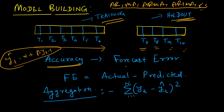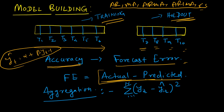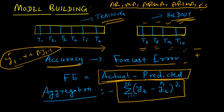To find the accuracy, you calculate the forecast error — the difference between actual and predicted. You cannot simply add them up because some errors are negative and some positive, and they might cancel. Instead, you square the errors so everything becomes positive, then add them up. That is known as Mean Square Error, or MSE. The model with the least mean square error is the best one.